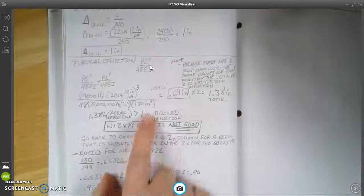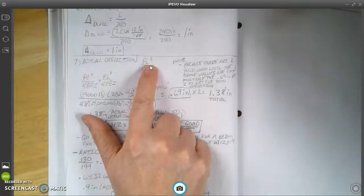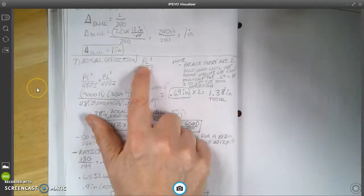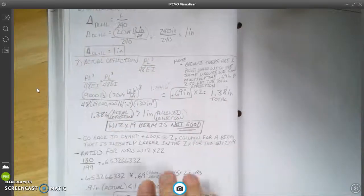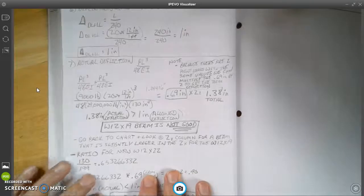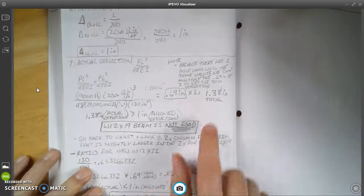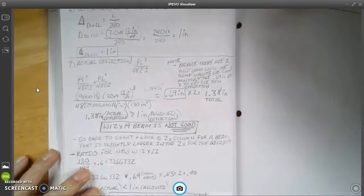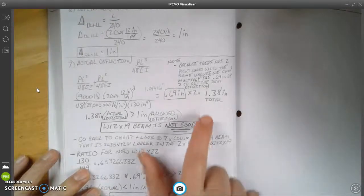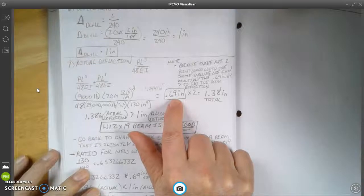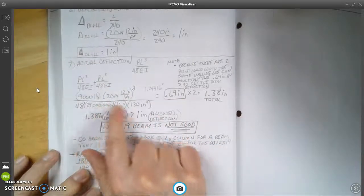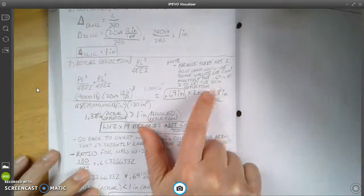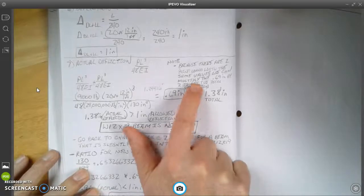You'll see that there is a difference here in the formula. It's not the same as what it was for beam that was shown. So I have a note here: it says because there are two point loads with same values, we can multiply this result from the formula here times 2 to get your total deflection.